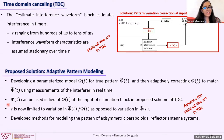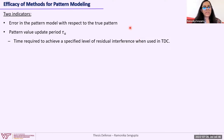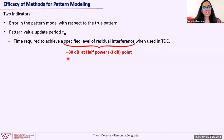How do we apply adaptive pattern modeling to TDC? We can use the model pattern phi in lieu of the true pattern phi-twiddle at the input of the estimation block. With this approach, tau is now limited to the variation in the ratio of the true pattern and the model pattern, as opposed to variation in just the true pattern, which is comparatively larger. In this work, we have developed methods for modeling the pattern of axisymmetric paraboloidal reflector antenna systems. To determine the efficacy of these methods, we use two indicators: first, error in the pattern model with respect to the true pattern, which should be negligible for a good model; and second, the pattern value update period tau_A, defined as the time required to achieve a specified level of residual interference when used in TDC.